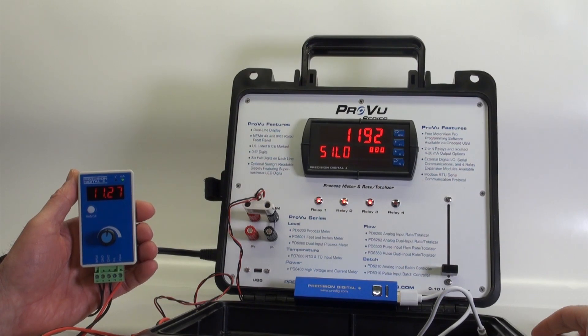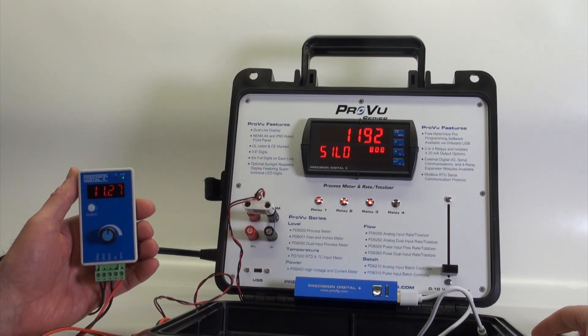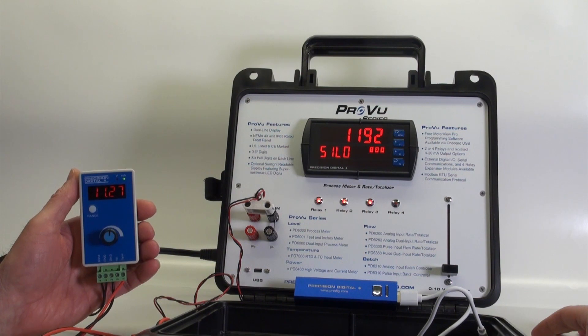Here we have Precision Digital's new PD9502 signal generator, a great low-cost tool to have in every toolbox out in the instrument control world. The PD9502 is $99.